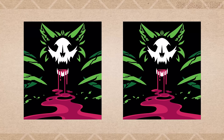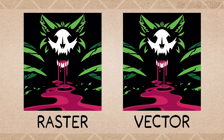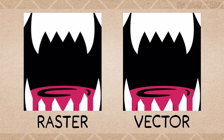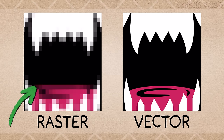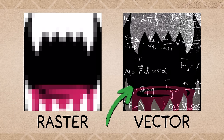This art looks the same, but it's actually two completely different things. The one on the left is a raster, the one on the right is a vector. You won't notice a difference until you upscale the art. Most digital art is a raster made of individual pixels. A vector is made of math.